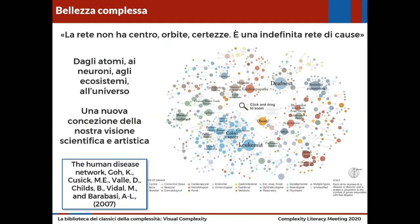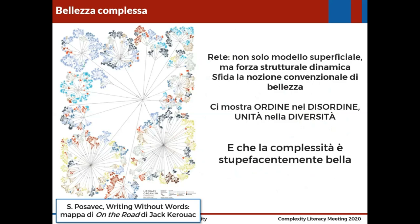Andiamo verso la chiusura. La rete non ha un centro, ordine e certezze — è una indefinita rete di cause, si dice nel libro. Quindi se parliamo di atomi, neuroni, ecosistemi, universo intero, vediamo che c'è una nuova concezione della nostra visione scientifica e artistica. In questo caso la rete che vediamo è una rete delle malattie umane, di come sono collegate tra di loro. La rete non è solo un modello superficiale, ma una forza strutturale e dinamica che sfida la nostra nozione convenzionale di bellezza, perché ci mostra ordine nel disordine e unità nella diversità. Come chiude Lima nel suo libro: la complessità può essere stupefacentemente bella. Una versione estesa della presentazione è disponibile sul sito complexiteducation.com.